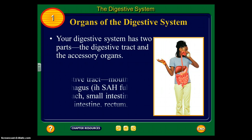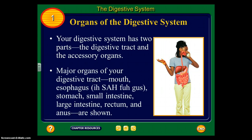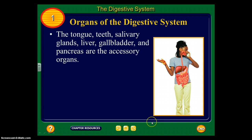Major organs of your digestive tract include your mouth, esophagus, stomach, small intestine, large intestine, rectum, and anus. We've got our mouth, esophagus, and stomach — which is a J-shape — along with the small intestine, large intestine, rectum, and anus. The tongue, teeth, salivary glands, liver, gallbladder, and pancreas are the accessory organs.